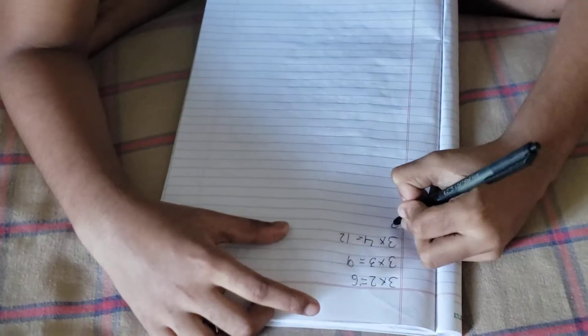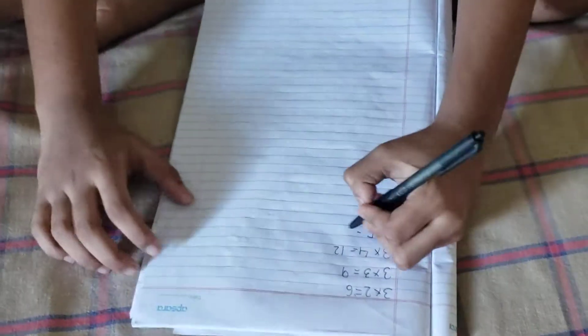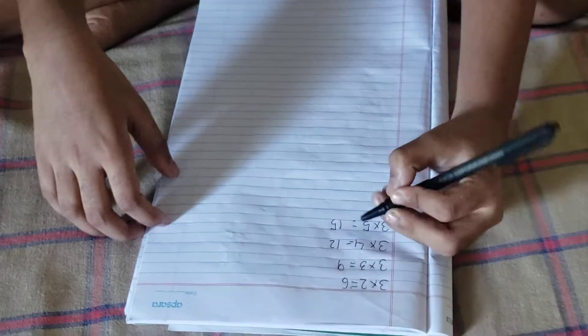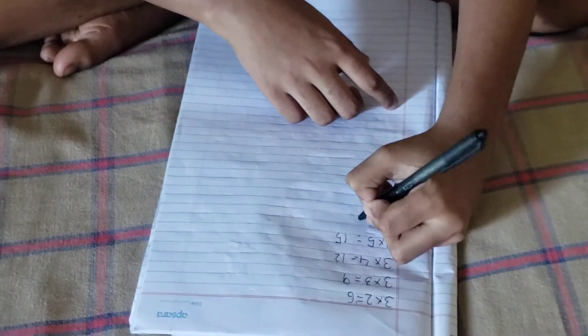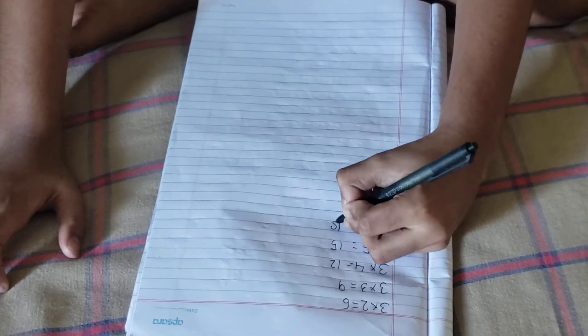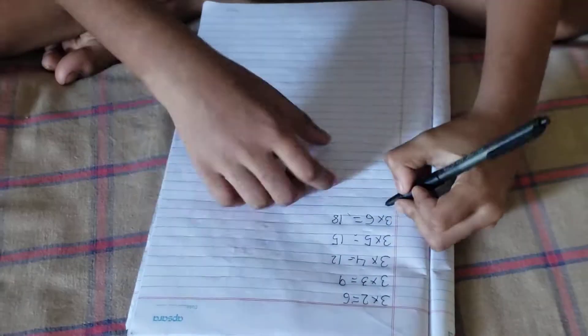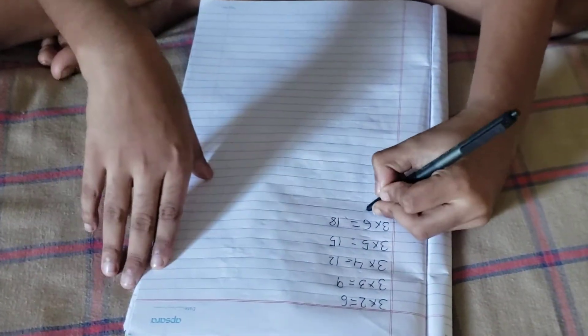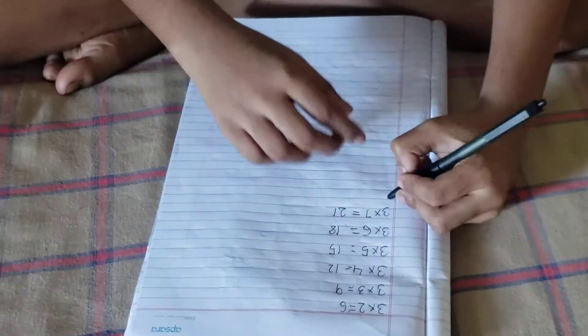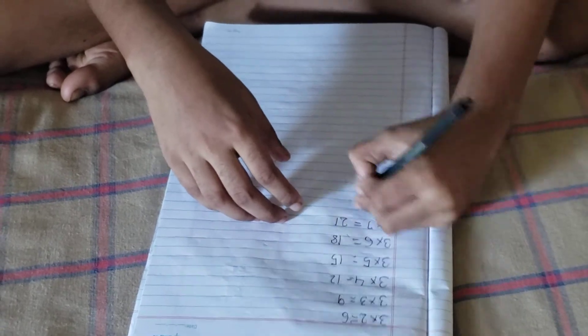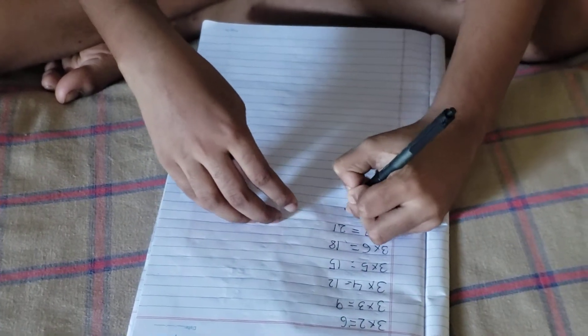3 times 5, 15. 3 times 6, 18. 3 times 7 equals 21. 3 times 8 equals 24.